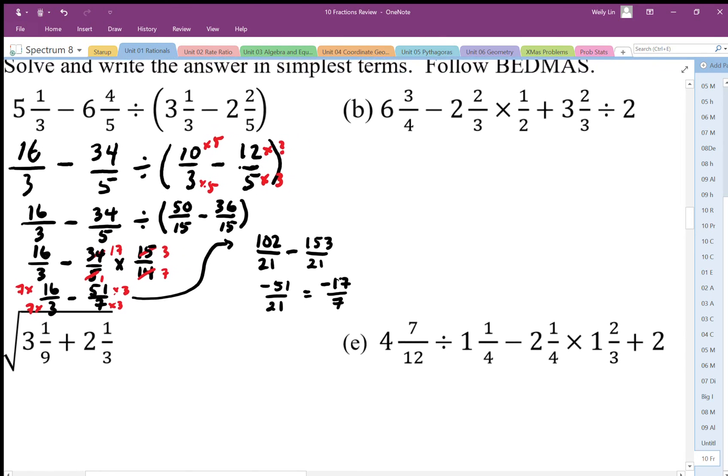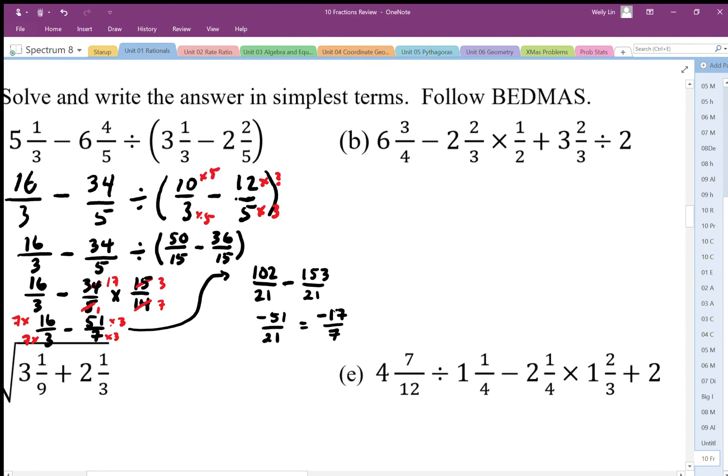For this one here, again same thing, we want to convert to improper fractions. So we end up with 27 over 4 minus this is going to end up being 8 over 3 times 1 half plus 11 over 3 divided by 2. So I guess you can change that to times by 1 half, just make sure we can get all the times and divides in the right spots.